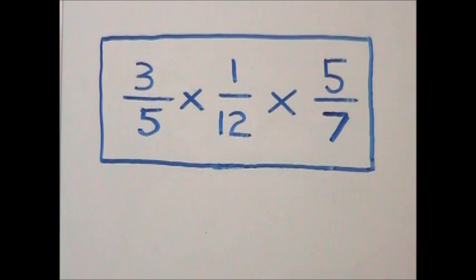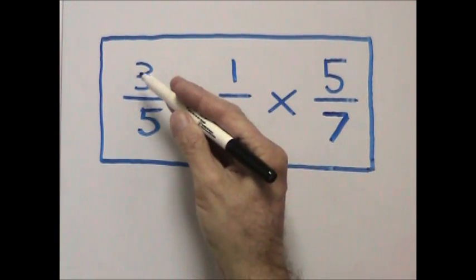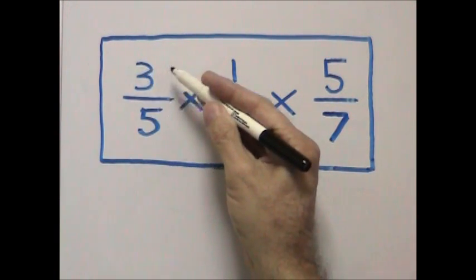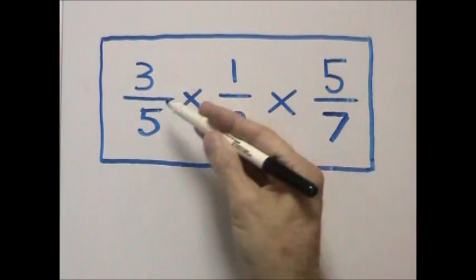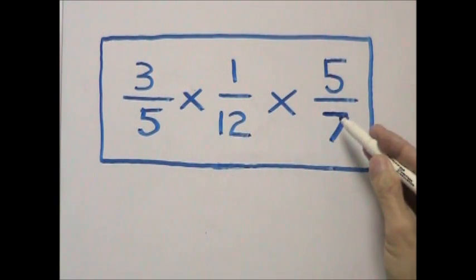When we multiply three fractions, we use the same process as when we multiply two fractions. We multiply across, starting with the numerators and then the denominators.